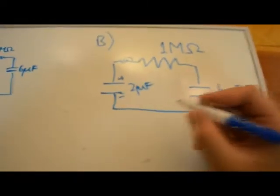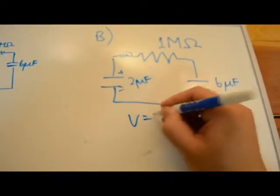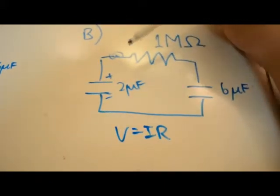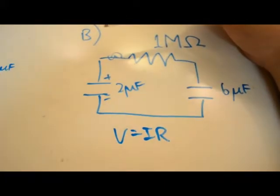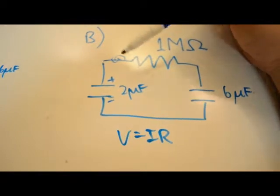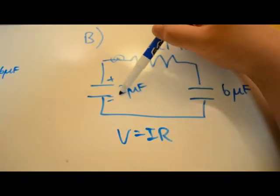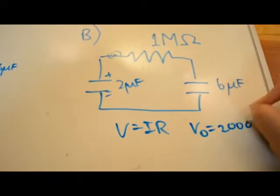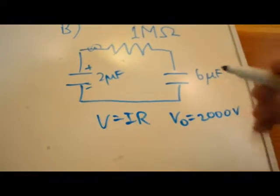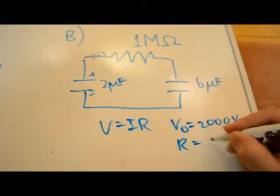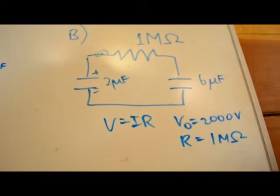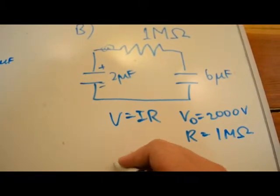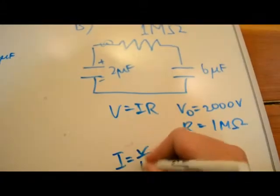To find the current, we use V equals IR. Initially, the instant S2 and S1 switch, the voltage across the 2 microfarad capacitor equals 2000 volts. So we have our V0 and our resistance, which equals 1 megaohm. We can calculate the initial current: I equals V over R,